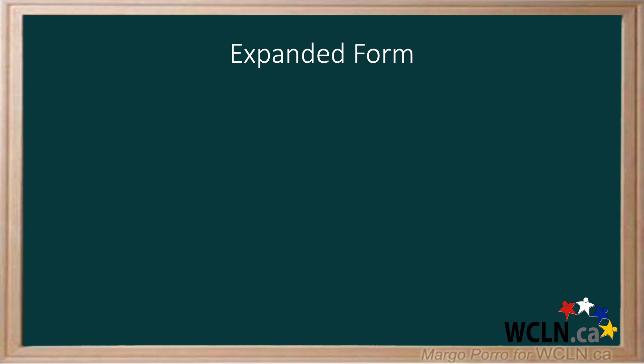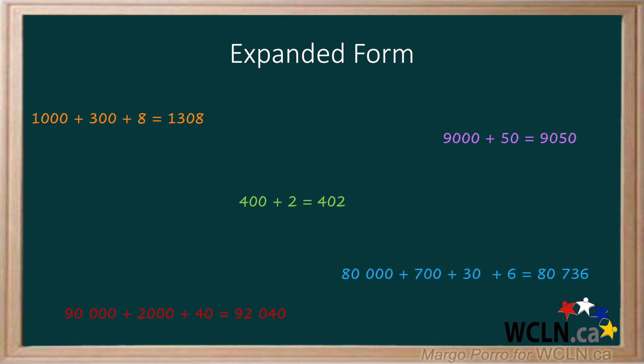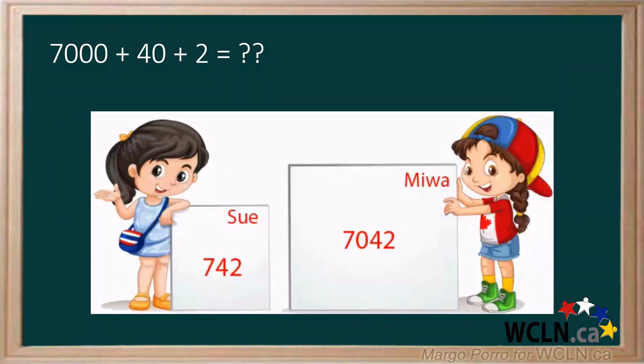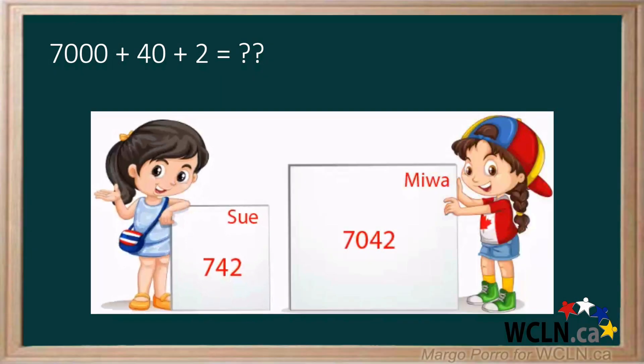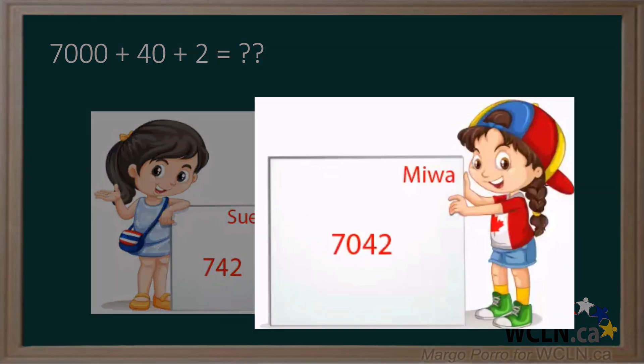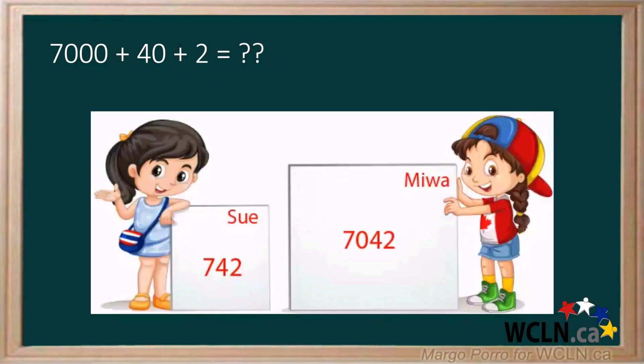In this video you will learn to express numbers using expanded notation. Two friends are disagreeing about the standard form for 7,000 plus 40 plus 2. Sue says the answer is 742. Miwa says the answer is 7,042. Who is correct?